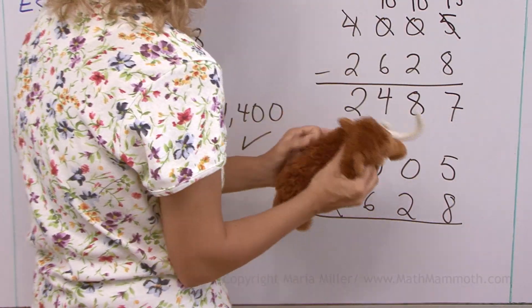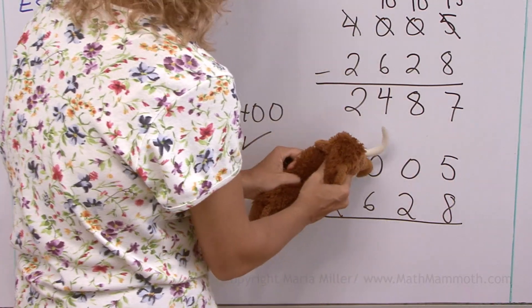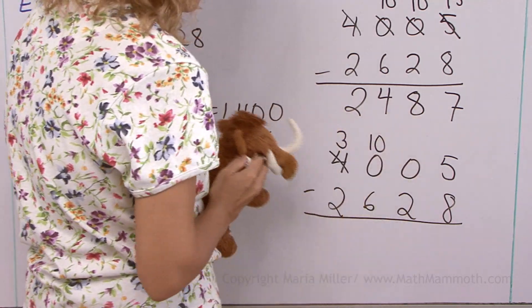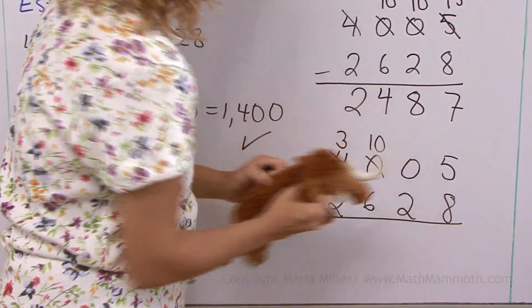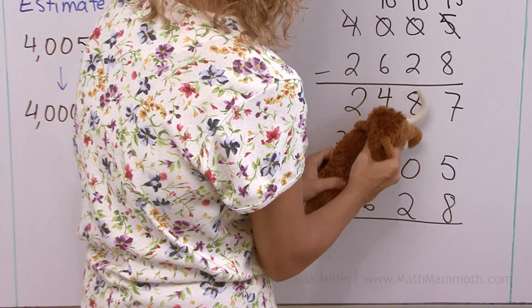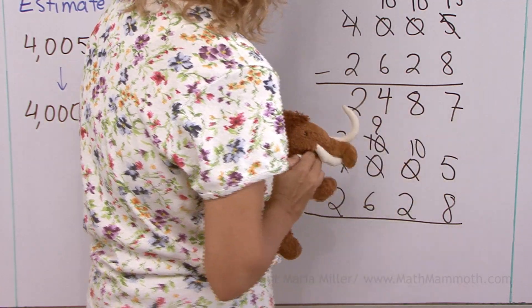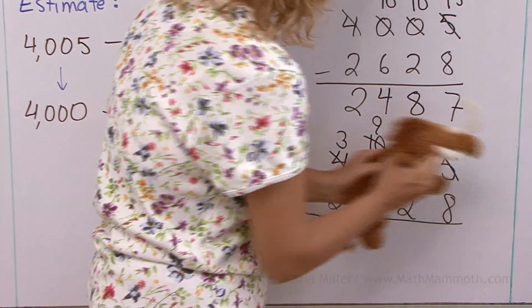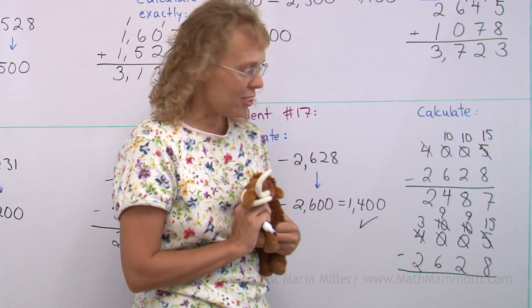5 minus 8. You cannot do that. So you have to go regroup. Yep. That's how we need to start. 3,000 and then 10 here. Now Mathi got it right, I think.